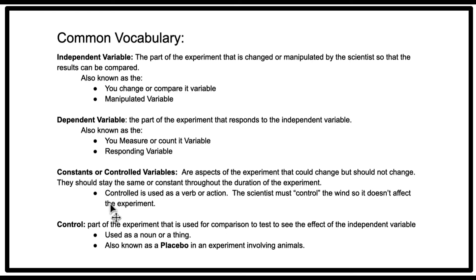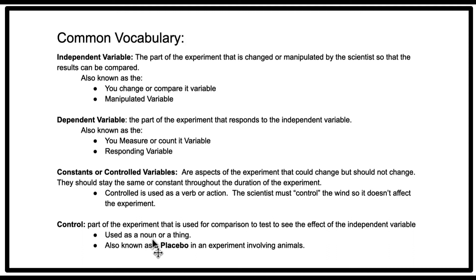Constants, or controlled variables, are always a point of confusion. Controlled variables are aspects of the experiment that could change but should not change in order for it to be a fair experiment — for example, making sure all plants receive the same amount of water. The control is used for comparison to see the effect of the independent variable. It's typically a noun or a thing, and is also known as a placebo in an experiment involving animals.